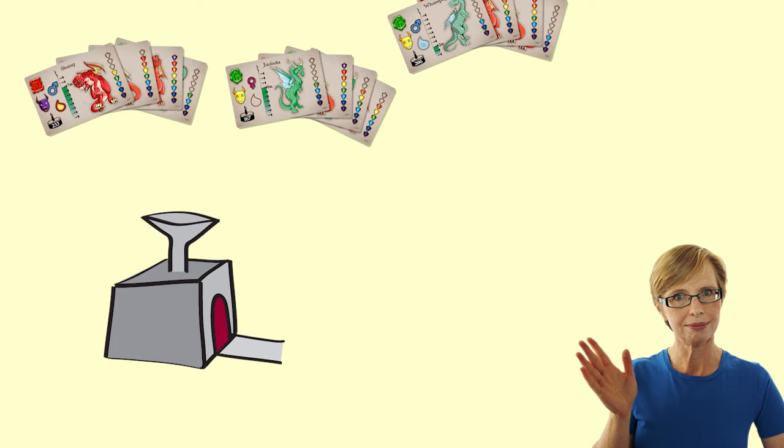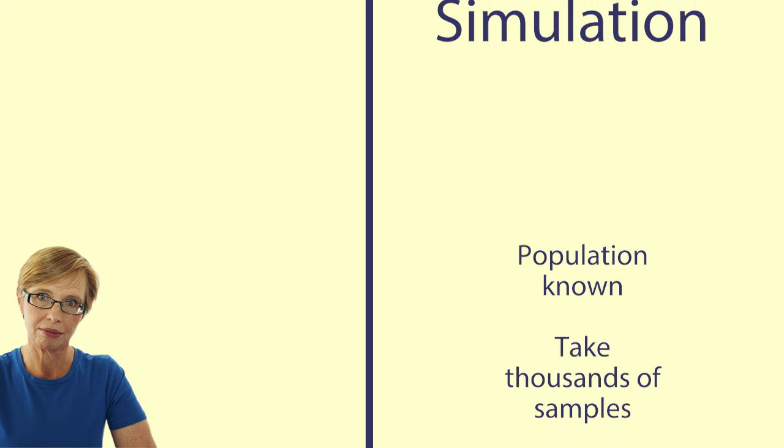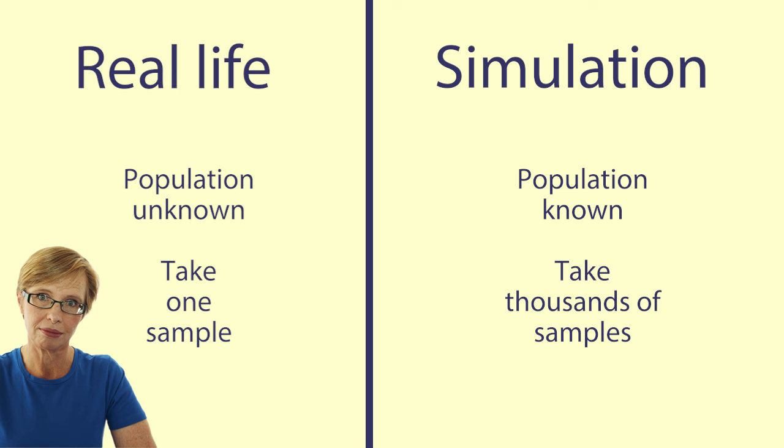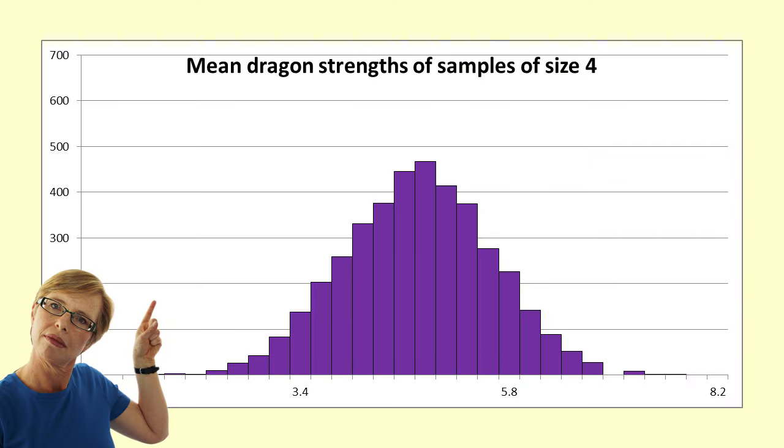It could take a long time doing this by hand so let's set up our computer to simulate taking 4,000 samples of four dragons from our population. We can only do this because we happen to know all about the dragon strengths having made them up in the first place. This is a simulation. We would never know this in a real life study. Here is the distribution of those 4,000 means from samples of four dragons.